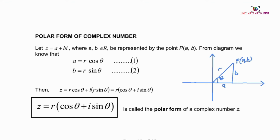Polar form of a complex number. Given the standard form Z equals A plus Bi, where A and B are real numbers, represented by point P on the Argand diagram, we can conclude that A equals R cos theta and B equals R sin theta. Substituting these into the standard form gives Z equals R cos theta plus iR sin theta. Factorizing R, we obtain the polar form: Z equals R times (cos theta plus i sin theta).